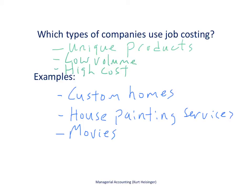What are some examples of products that companies would produce when they use a job costing system? We already talked about custom homes. House painting services is another example — each job is unique and we probably don't have a huge volume of houses that we paint. And a company that makes movies would almost certainly use a job costing system, since each movie is unique, they're not made in large volumes, and they do tend to be high cost.